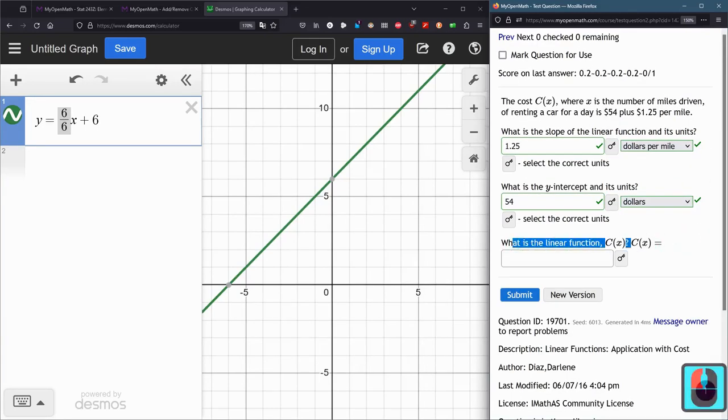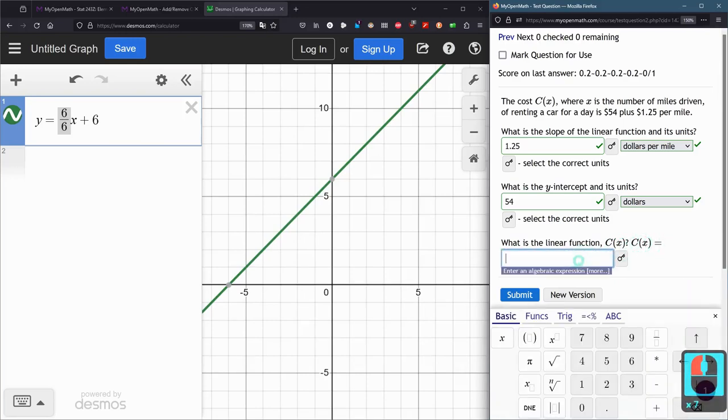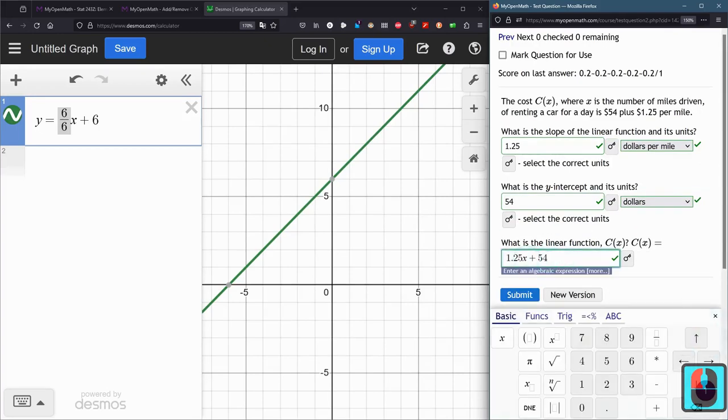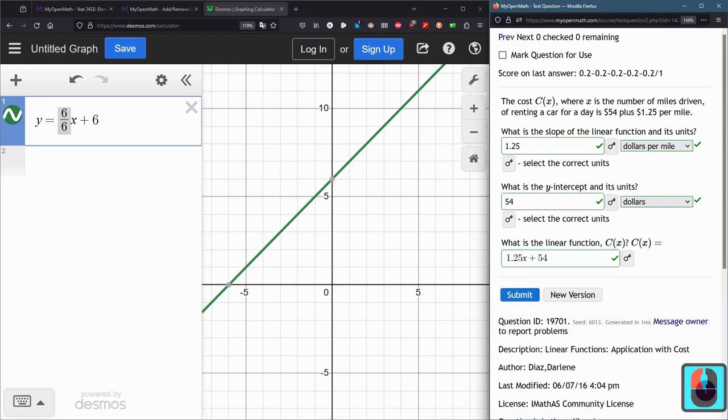Alright. The linear function right here. It already has c of x. This stands for y. So we're just putting in 1.25x plus 54. So hopefully this is enough to refresh you on lines. For when we use Excel, which is coming up relatively soon.